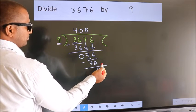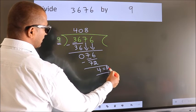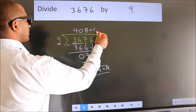No more numbers to bring it down, so we stop here. This is our remainder. This is our quotient.